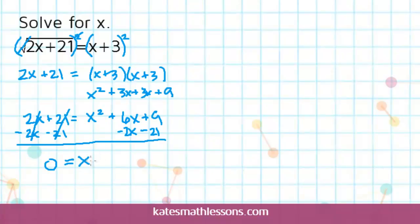I can just bring down the x squared. 6x's minus 2x's is 4x's and then 9 minus 21 is negative 12.